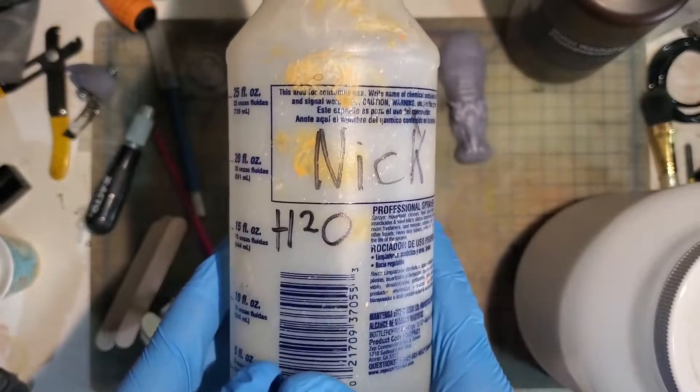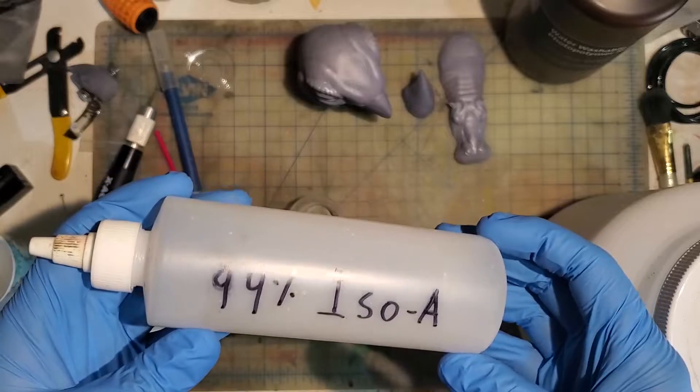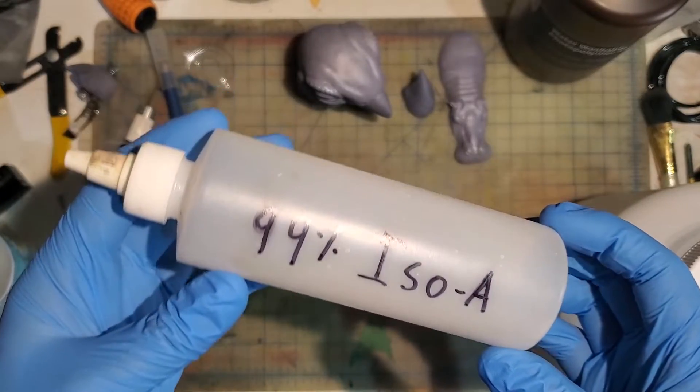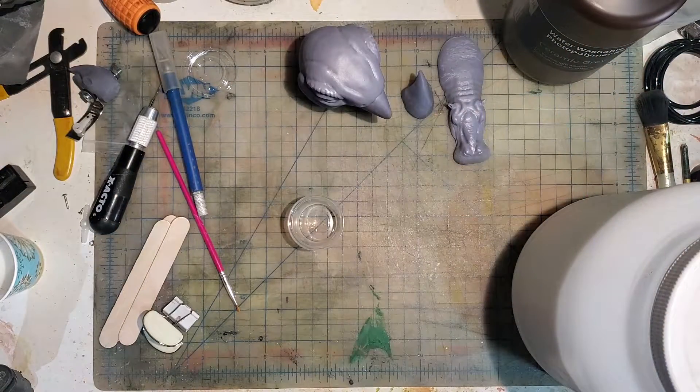You'll still want to rinse off any remaining residue from your prints after this, so make sure you have either some water or some alcohol handy, depending upon the resin you're using. I'll be using the water washable resin from Eligu, so I'll clean the parts in a tub of water.